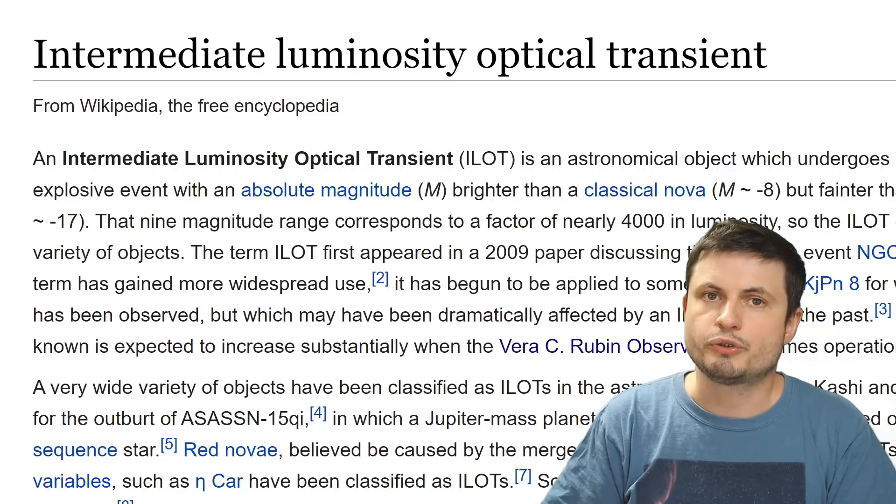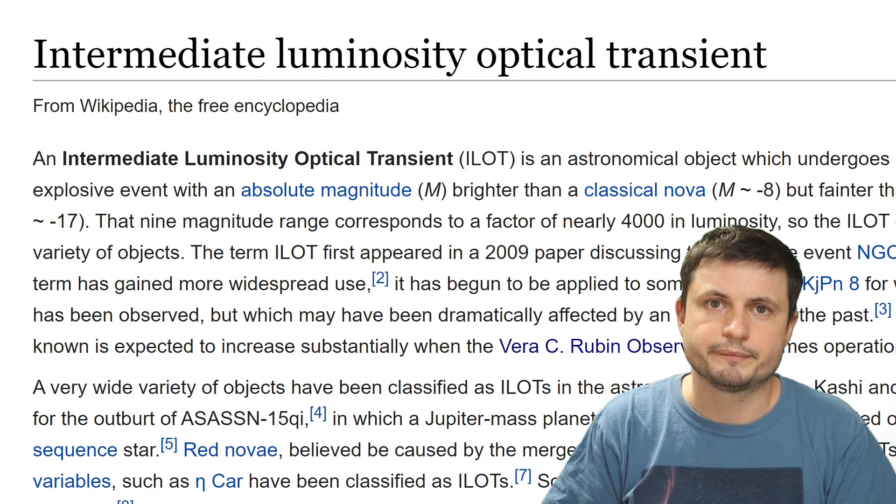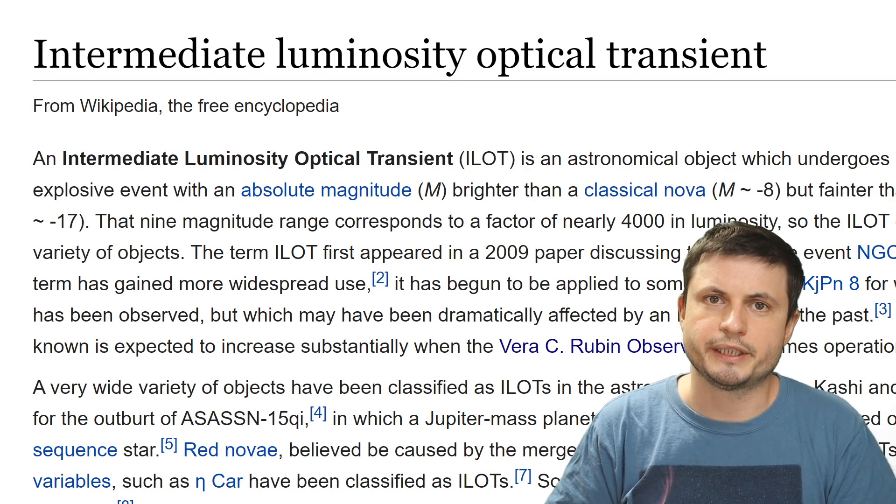And we have a term for that. We usually refer to them as ILOT, intermediate luminosity optical transient. And although some of these can be explained as failed supernova, or possibly some other very powerful events involving stars, in this case we actually have absolutely no idea what happened.